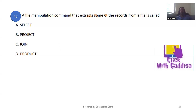There is a file manipulation command that extracts some records from a file. The data table extracts the command. If you have a data definition language, you can use the command to create a table, insert data, change data, retrieve data, and use the select statement. So this is A.